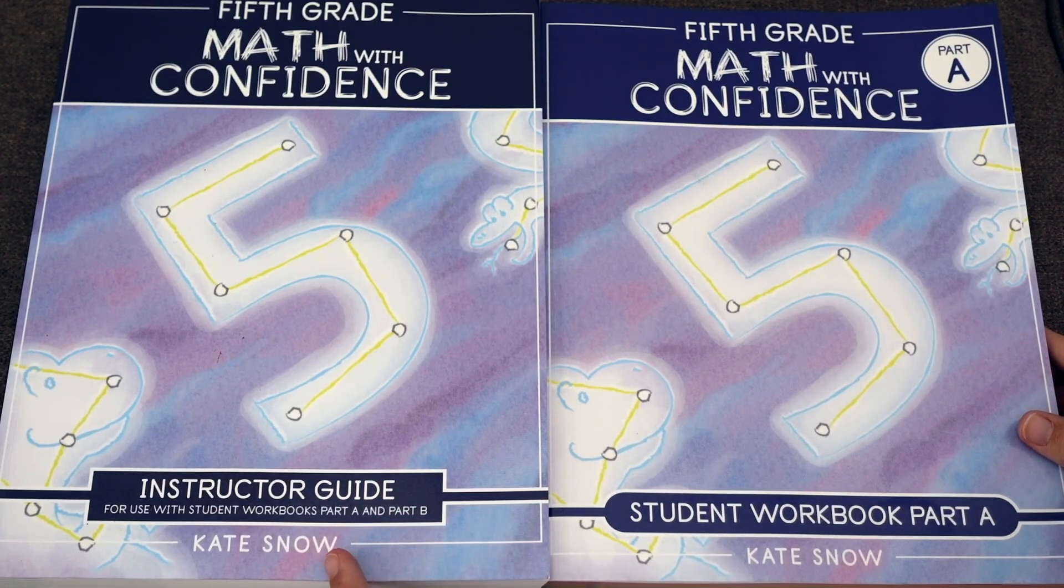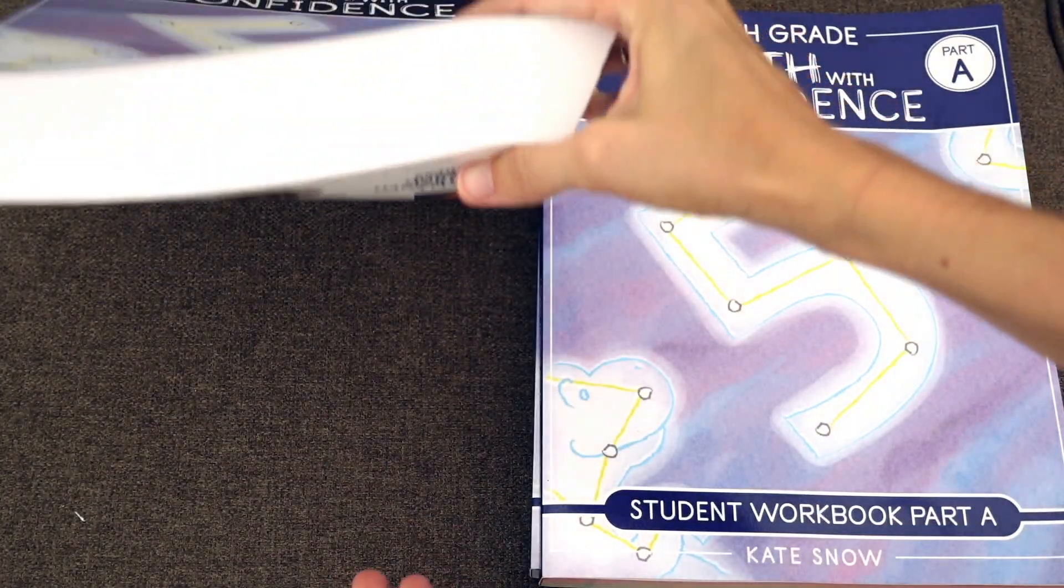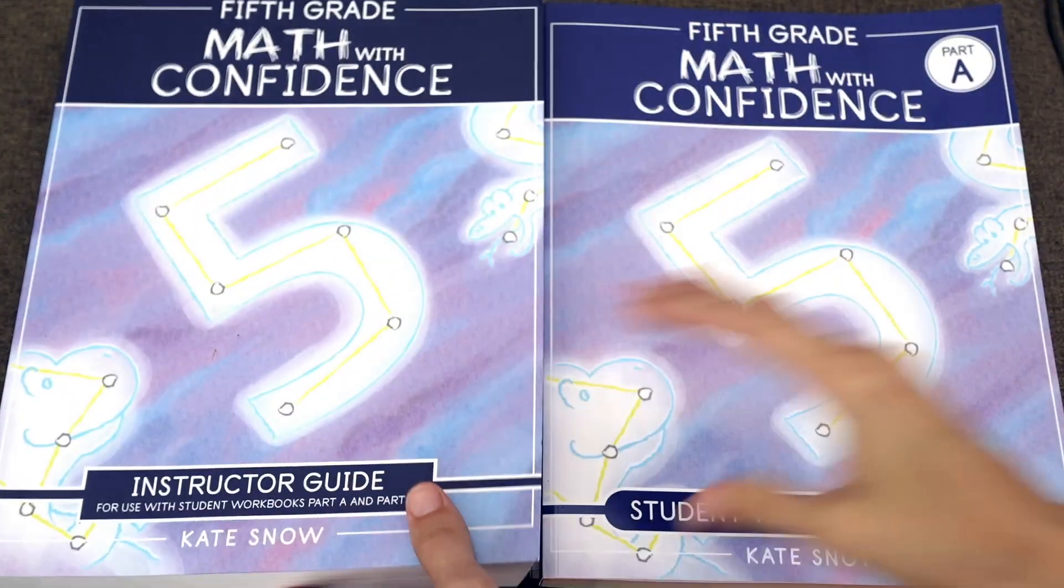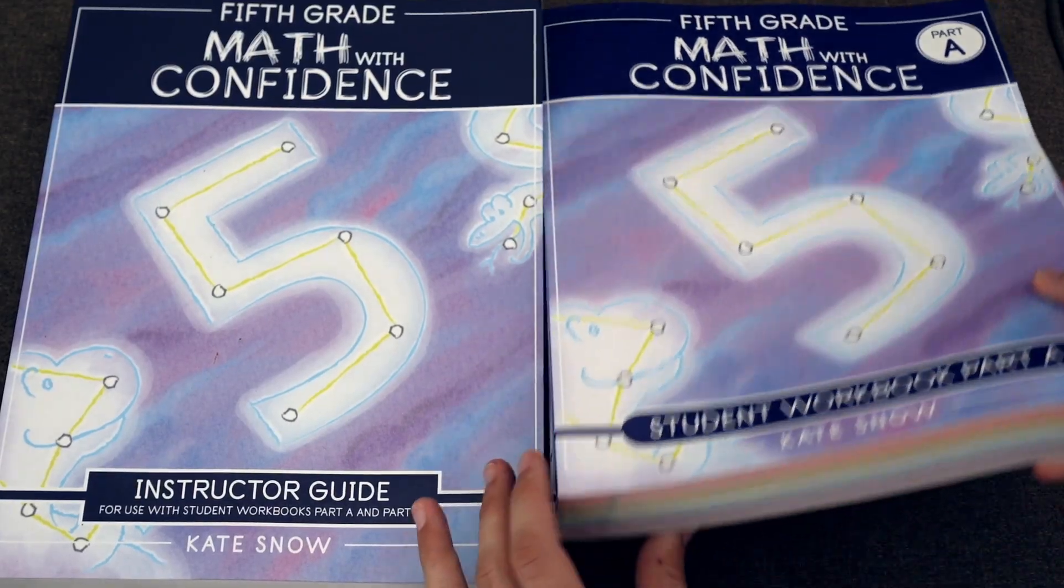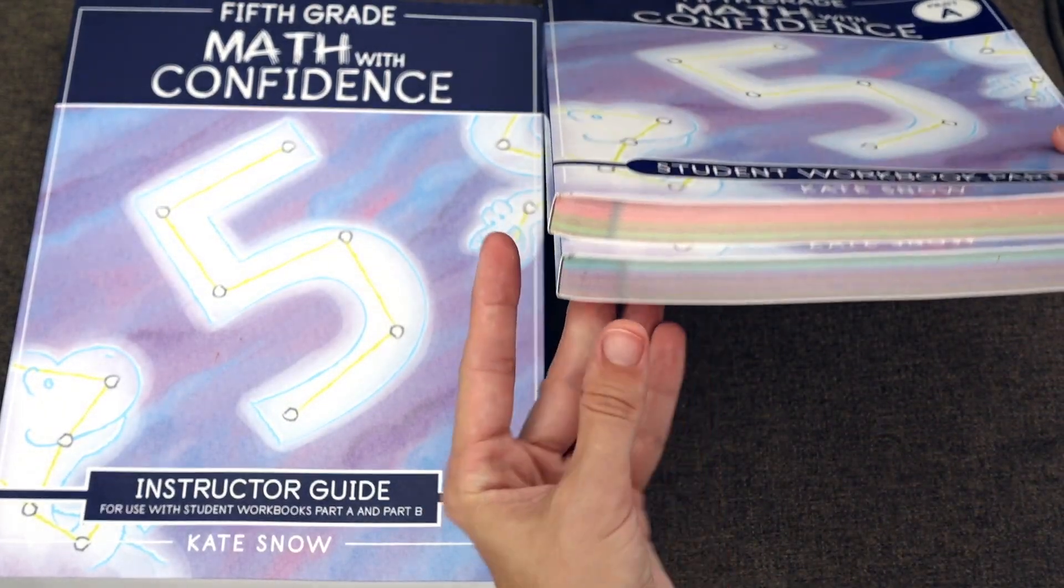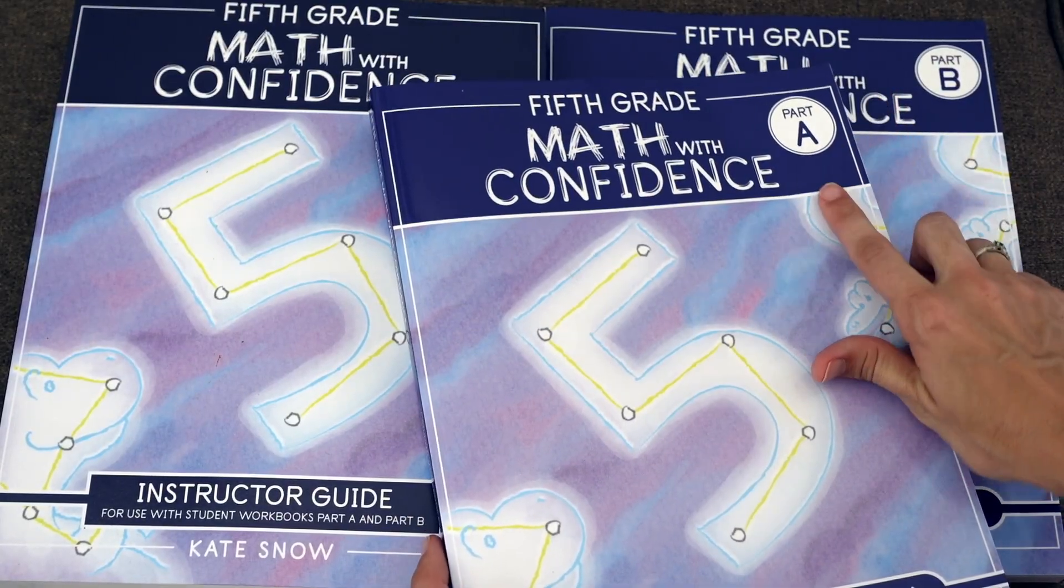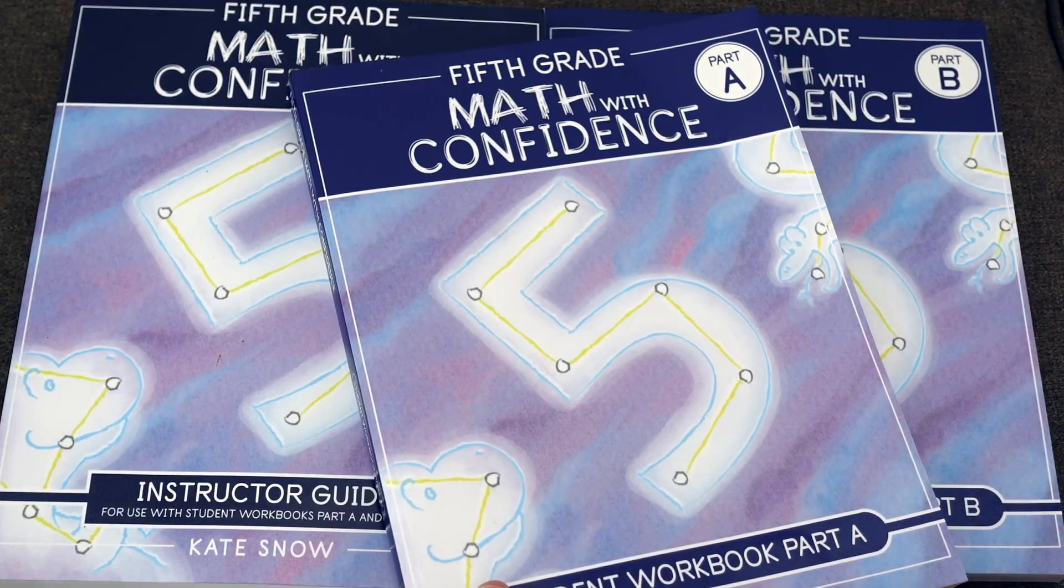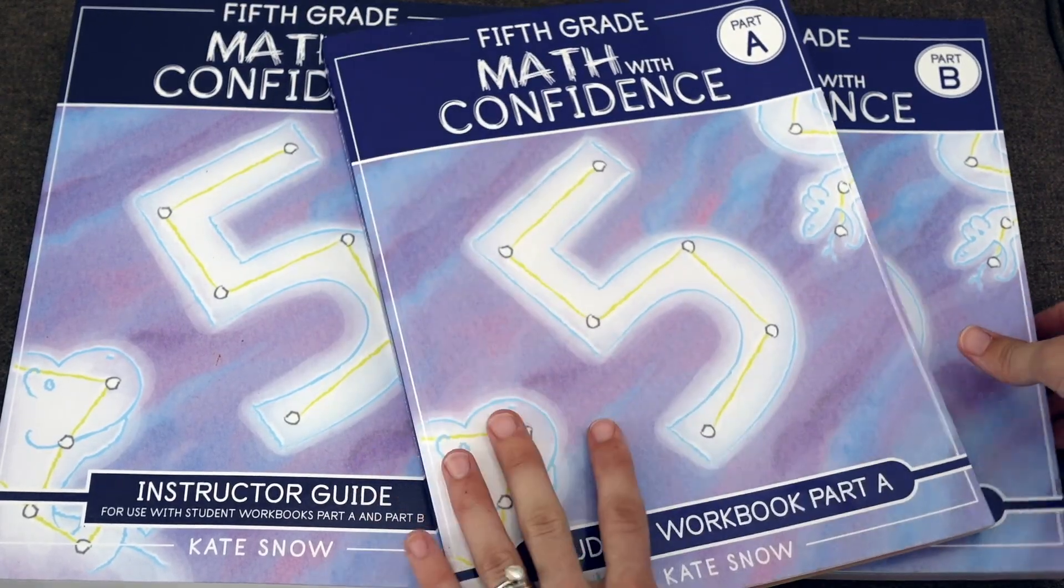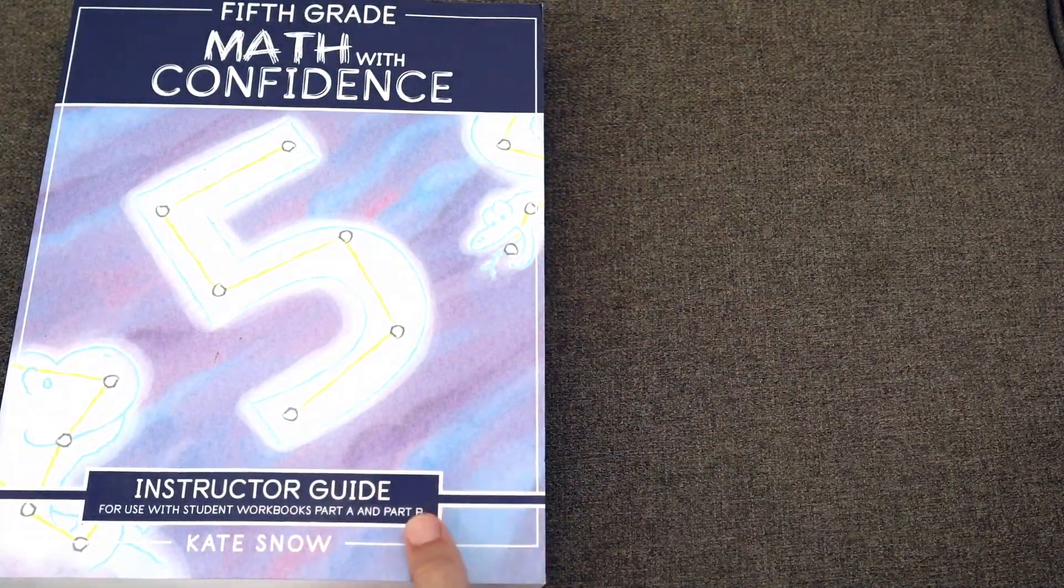Let's dive right in to 5th grade Math with Confidence. Like the other levels, it has a nice meaty instructor's guide and then like levels 3 and 4, 5th grade comes with two student books so that the student book isn't too thick or heavy for your student to cart around. So those are labeled A and B. You can just put B on a shelf until you're later on into the year and just work with book A at the beginning.